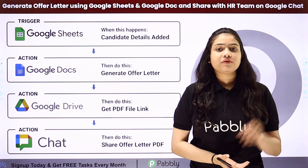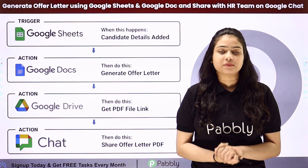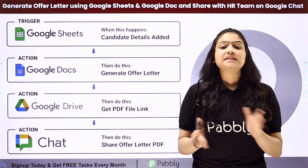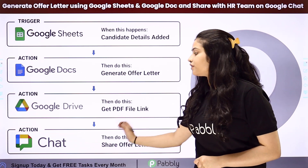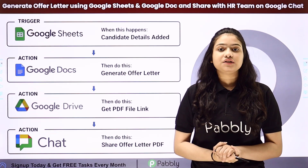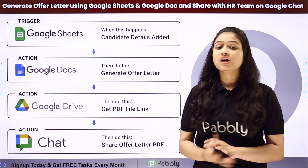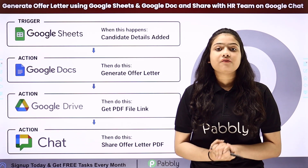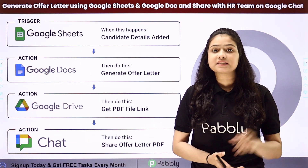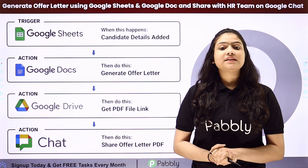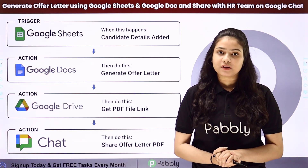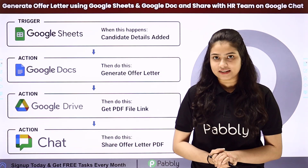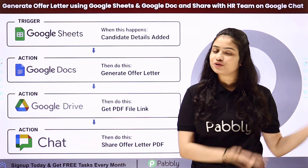I work in an HR department where the regular task is to create and send job offer letters for multiple candidates. For this process, I have created an amazing automation with the help of PablyConnect by setting up a connection between Google Sheets, Google Docs, Google Drive, and Google Chat, so that whenever I add a new row with candidate details in my spreadsheet, a job offer letter is automatically created and a PDF is sent to my team on Google Chat Workspace. We will set up this entire connection without any coding or programming skills. To learn the automation step by step, let me take you to my screen.